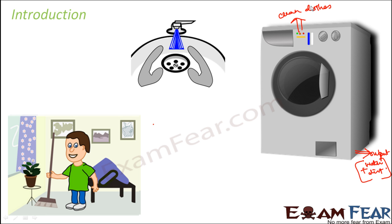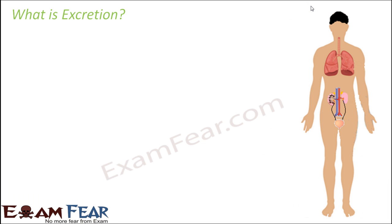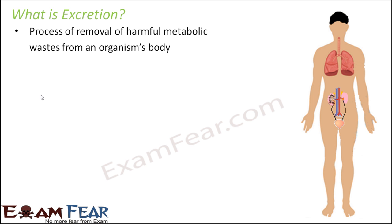That is the process of excretion. In a washing machine, water comes out of the pipe carrying away all the dirt — similarly, that water in our body is nothing but urine. Urine is that fluid which carries away all the waste products of the body. In this lesson, we are going to talk about how urine is actually formed and how urine carries different wastes. Several organs are involved in this process and together they form the excretory system.